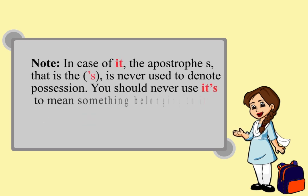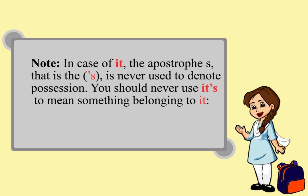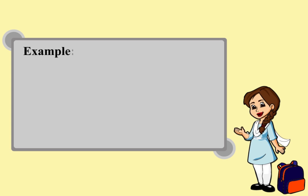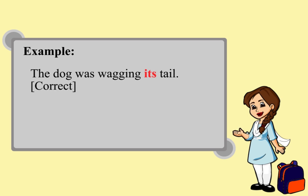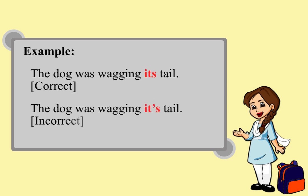Note: in the case of 'it', the apostrophe S is never used to denote possession. You should never use 'it's' to mean something belonging to it. Example: 'The dog was wagging its tail' is correct. 'The dog was wagging it's tail' is incorrect.